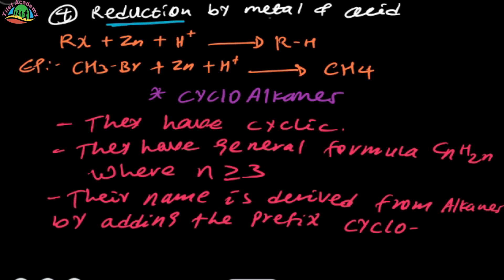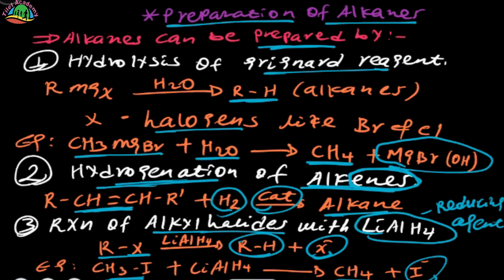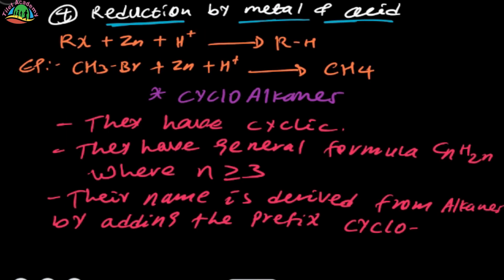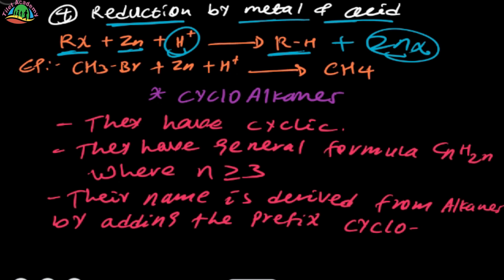Number four: reduction by metal and acids. Alkyl halide plus a metal and a proton — hydrogen proton — reacts with the metal. For example, metal bromide plus zinc plus hydrogen gives zinc bromide.